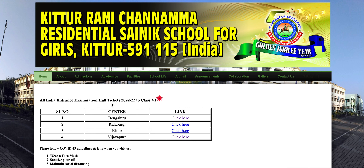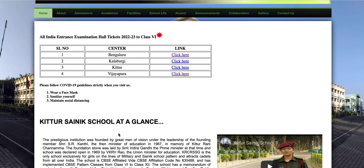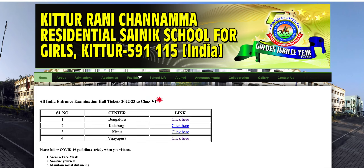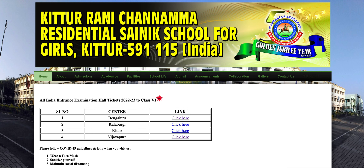This is the All India entrance examination for Kittur Rani Scenic Schools 2022 for Class 6. There are 4 centers: Bengaluru, Kalburgi, Kittur, and Vijayapura. These centers are provided by the Kittur Scenic School. This is a residential Scenic school specially for girls only — there is no entry for boys.